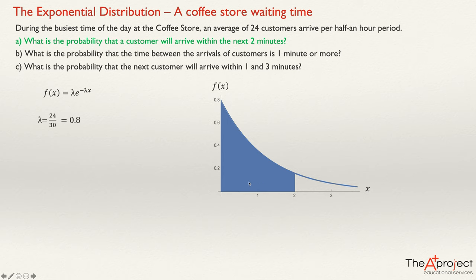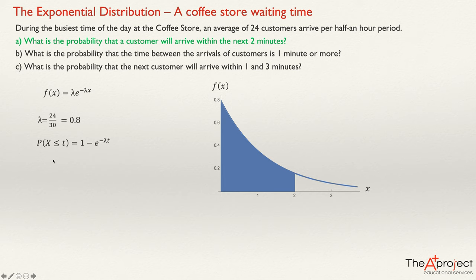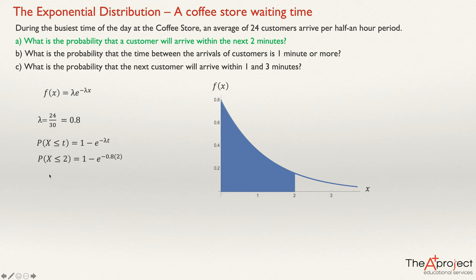The formula for the cumulative probability is: P(X ≤ t) = 1 − e^(−λt). Since t = 2, this becomes P(X ≤ 2) = 1 − e^(−0.8 × 2). Substituting lambda = 0.8 and t = 2, we use a calculator to evaluate this expression.